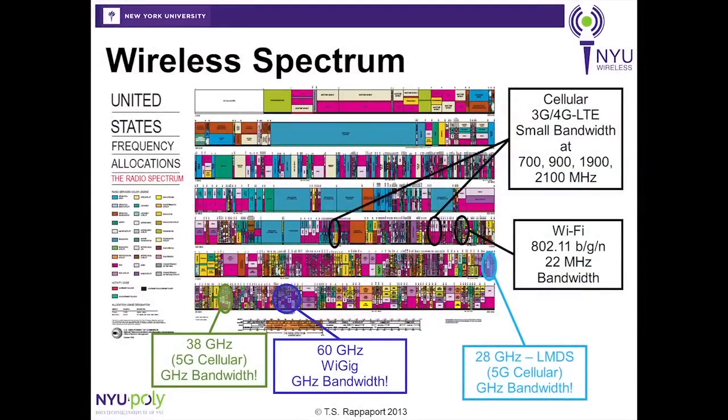Today, the cellular world operates in small slices of frequency below 5 GHz. All of these spectrum bands contain a sliver of bandwidth such that a cell tower can only transmit a certain amount of capacity, even using today's 4G LTE technology.